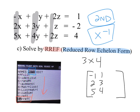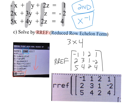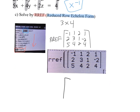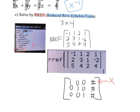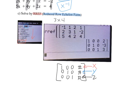Then include the constants 1, -2, 4 as the fourth column in the same matrix. Tell your calculator to find the RREF of that 3×4 matrix. The calculator uses the algebraic row-reduction approach from Algebra 2 to transform the matrix into a form with 1, 0, 0, [number]; 0, 1, 0, [number]; 0, 0, 1, [number] — and that tells you the solution for x, y, and z.